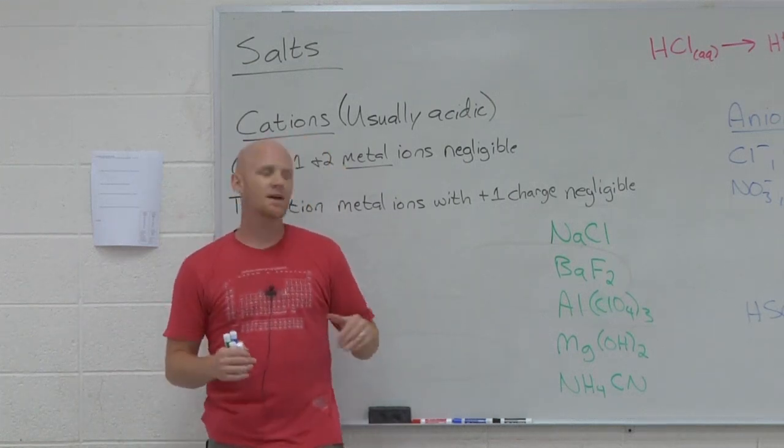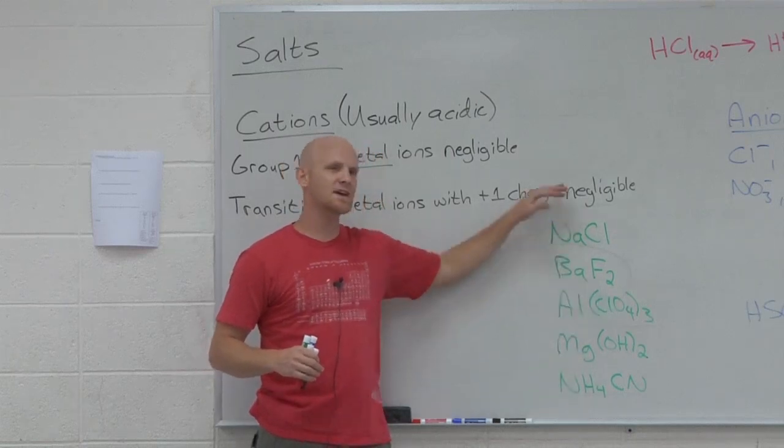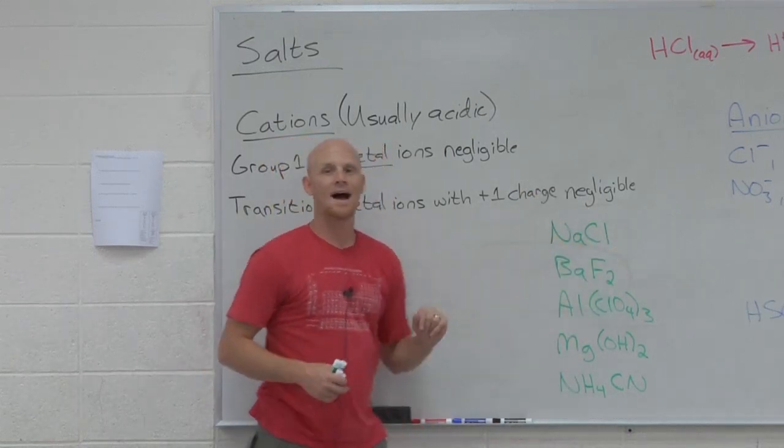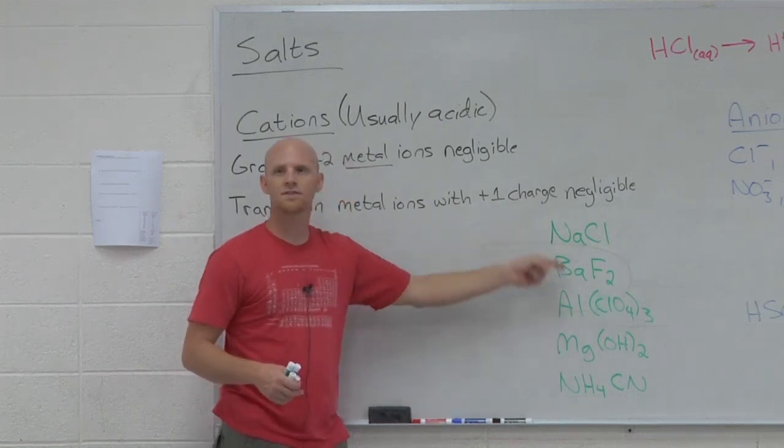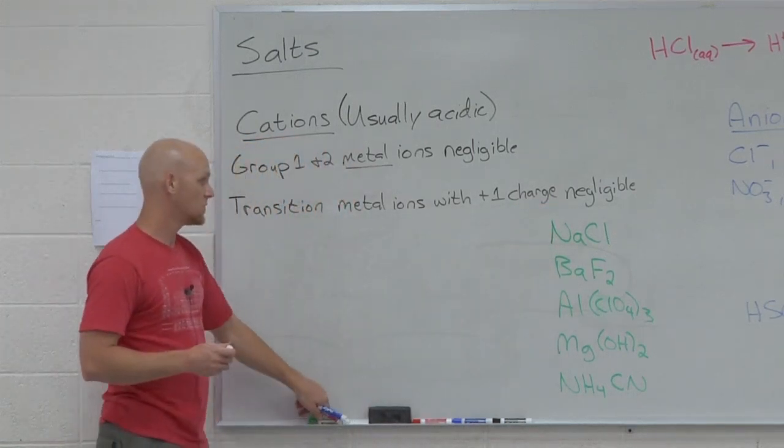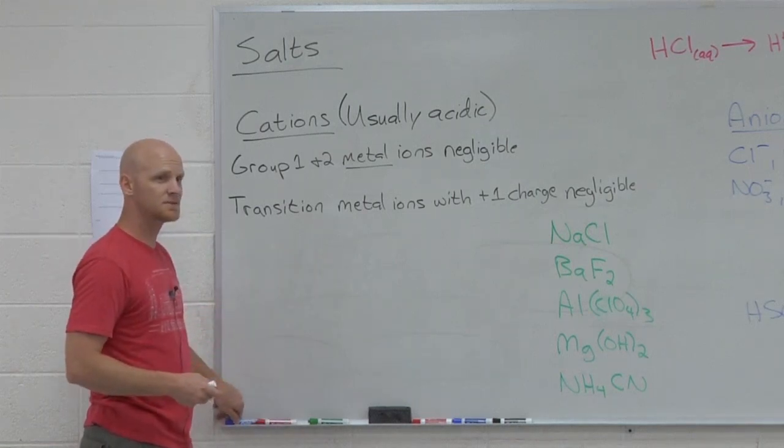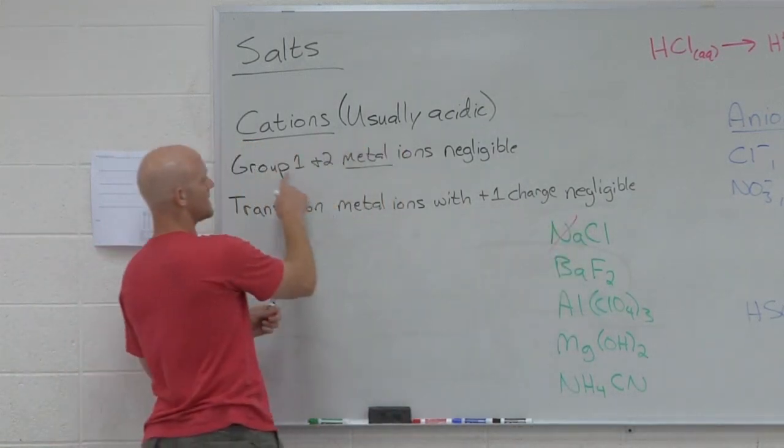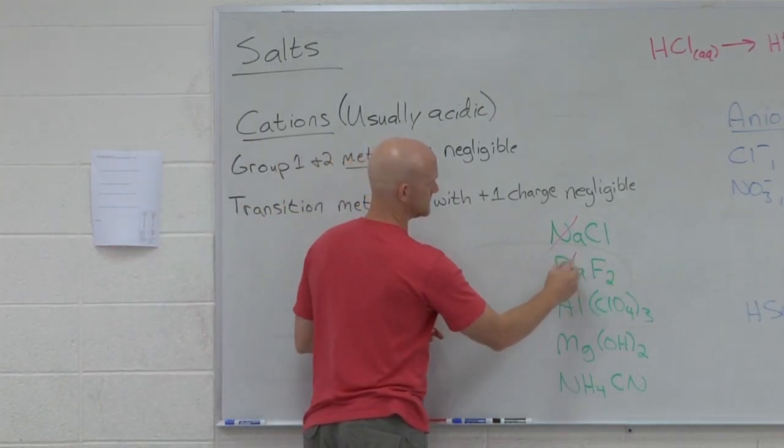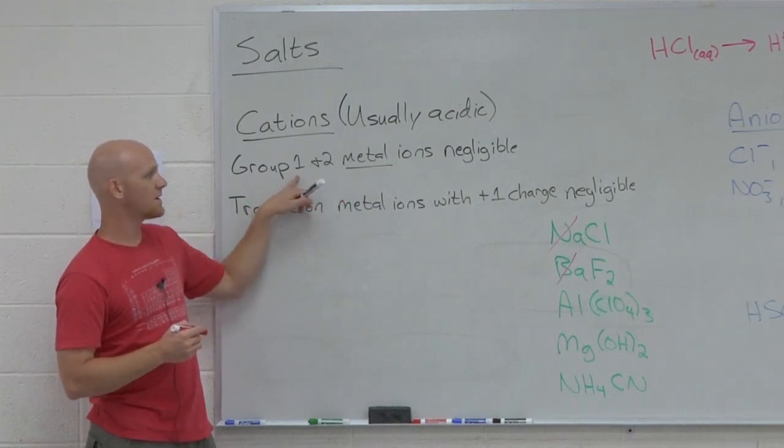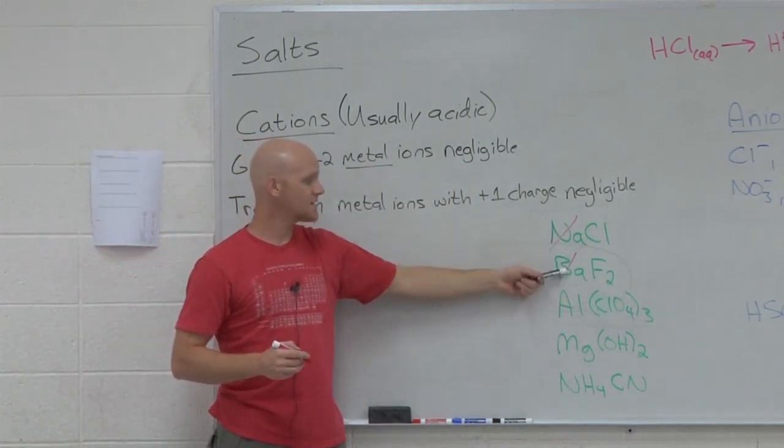What I usually do to figure this out a little faster, instead of going look at the cation then look at the anion, I usually look at all the cations at the same time and cross out the ones that are negligible. Which of those cations is negligible? Sodium's group one, we'll get rid of him. Barium's negligible, he's group two.